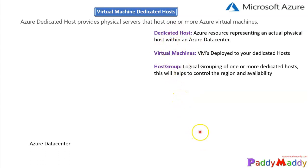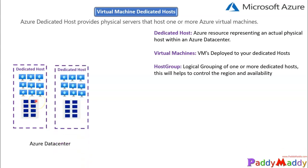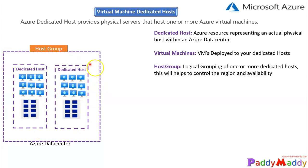Let's understand the architecture of the dedicated host. Within the Azure data center, you get a physical server, and within that physical server you can spin up as many virtual machines as the capacity allows. If you have more than one or two hosts, you can group them using a host group. For example, if you're creating resources in East US, you dedicate that location for a specific region and use a logical host group to tie your business application to that region.